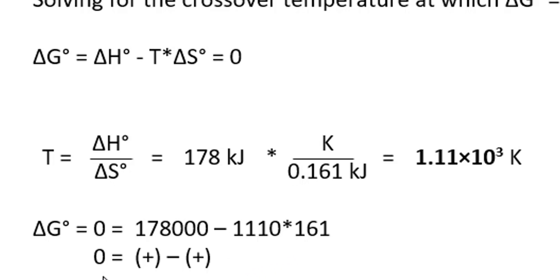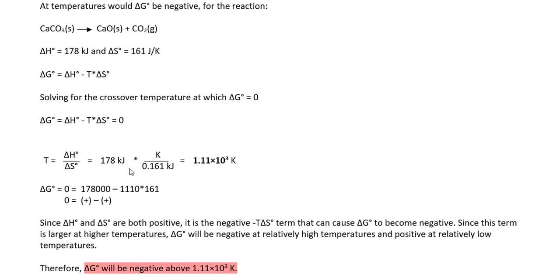The only way to get ΔG to be negative is if this second term is larger. The only way to do that is temperature increases. So we can conclude that for ΔG to be negative, we need temperatures above 1.1 times 10 to the third Kelvin.